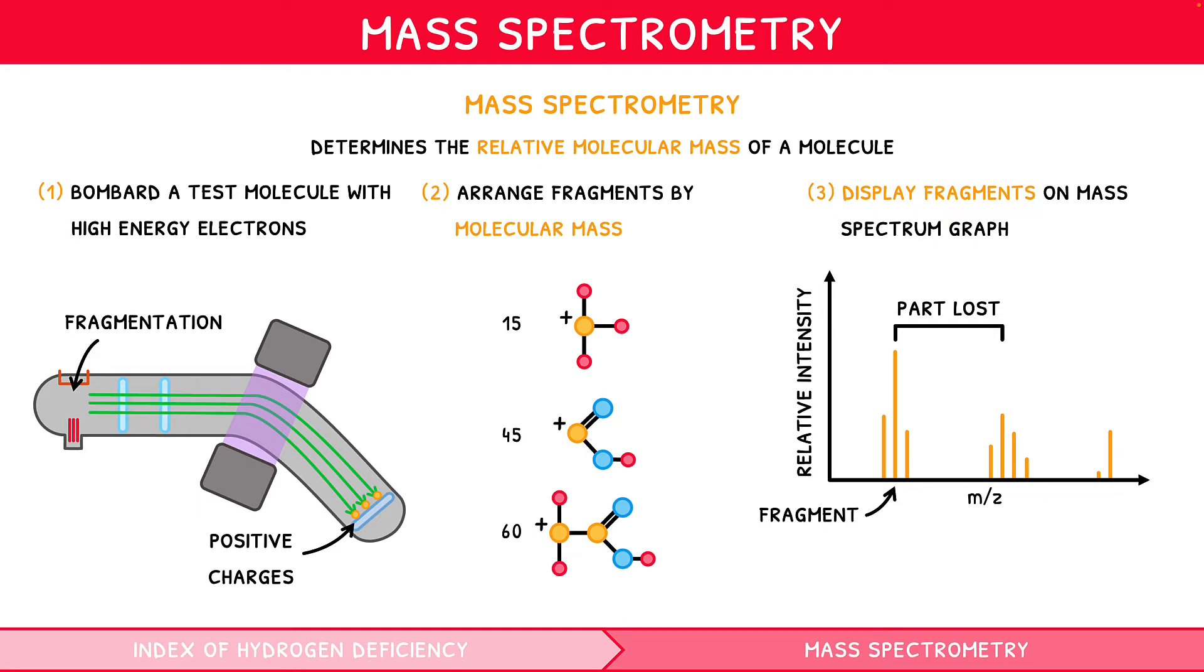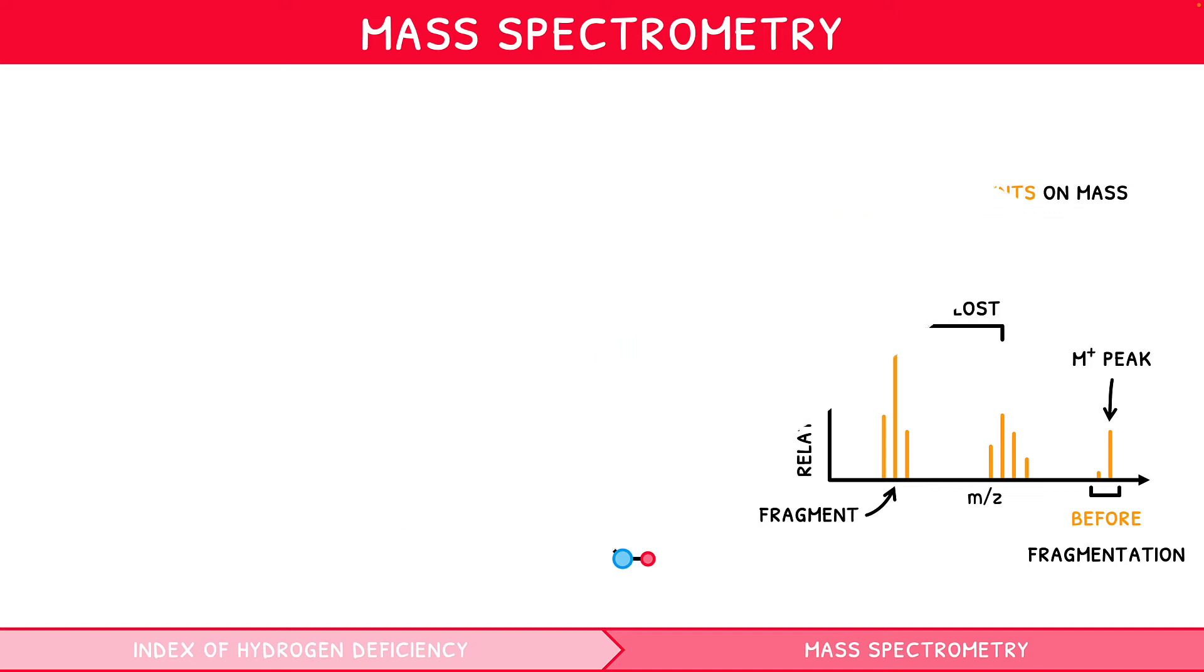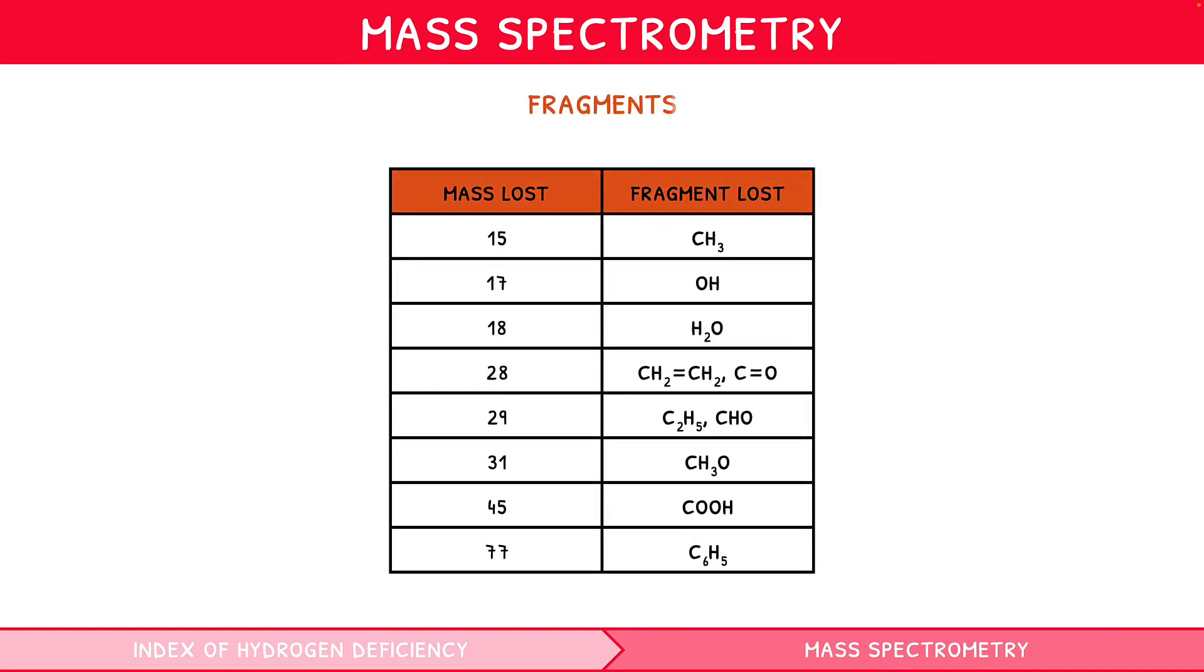It is crucial that you understand that the most prominent right-hand line on the graph indicates the molecular mass of the whole compound before any fragmentation occurs. It is termed the molecular ion, M plus peak, and represents the removal of a single electron. There are several fragments, each with a unique molecular mass, which are found in many organic species and functional groups, making their molecular masses worth memorizing for your exam.